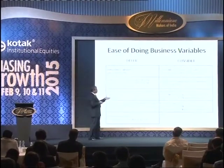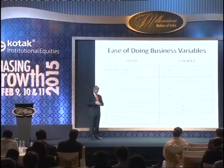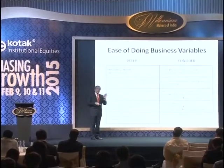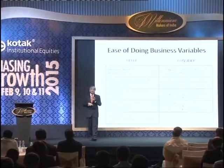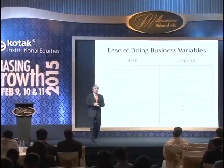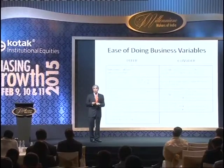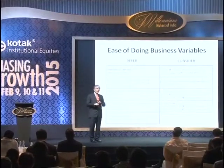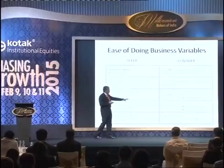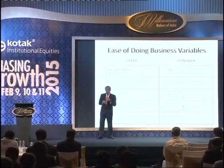Online approvals linked to PAN: Madhya Pradesh has proposed a 30-day automatic approval for all labor laws — if you file and don't hear back, you get automatic approval. They identified the four most frequent approvals: electronic record processing, women working at night, seven-day working, and proposed to give automatic approval for those.